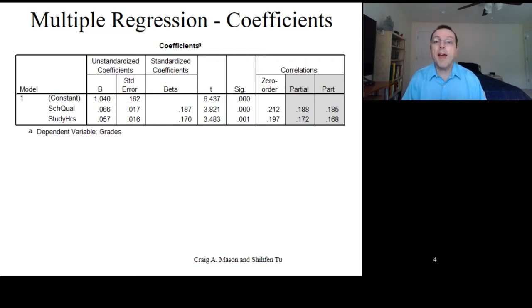We then have the t-test for each regression coefficient, and remember that's calculated by dividing the unstandardized regression coefficient by the standard error of the regression coefficient.